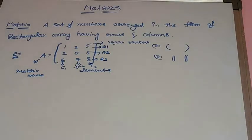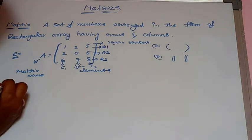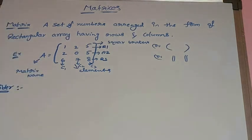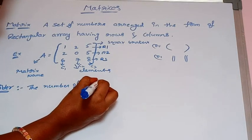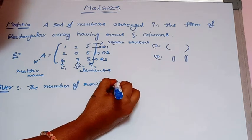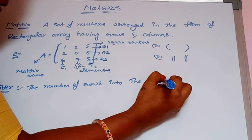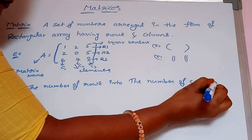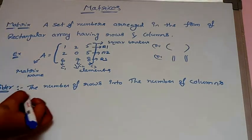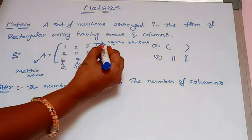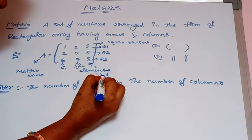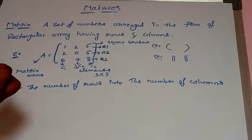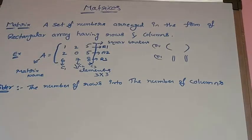A very important concept is the order of a matrix. Order is nothing but the type or size of a matrix. Order means the number of rows multiplied by the number of columns. In the above example, there are 3 rows and 3 columns, so we write 3 by 3. We call this a 3 by 3 matrix.